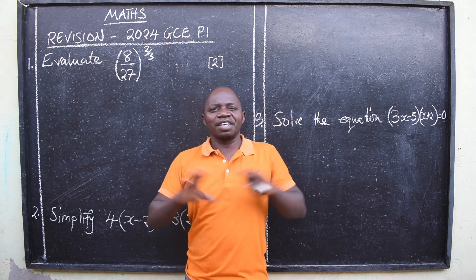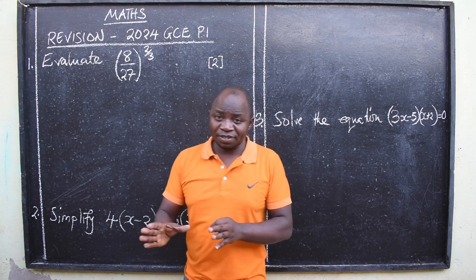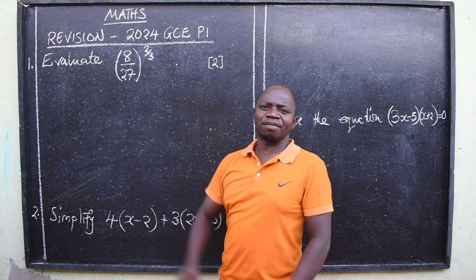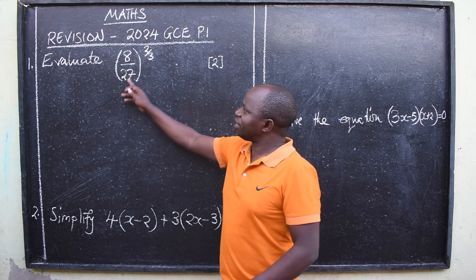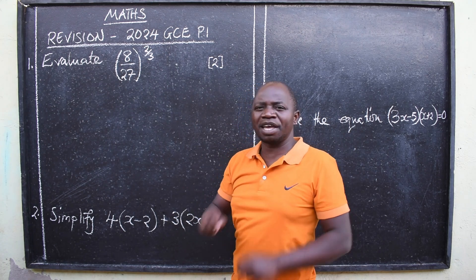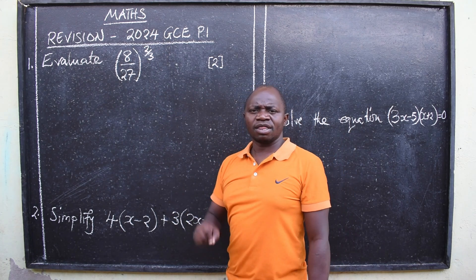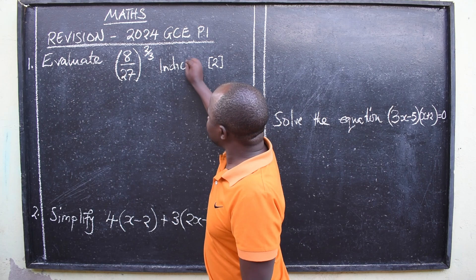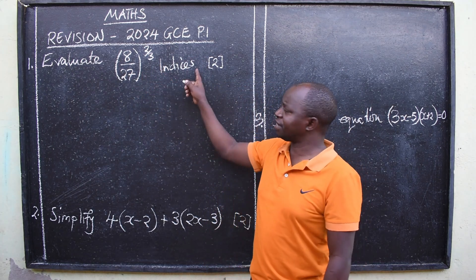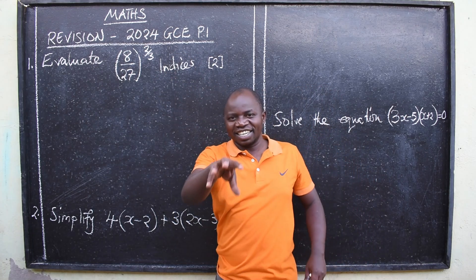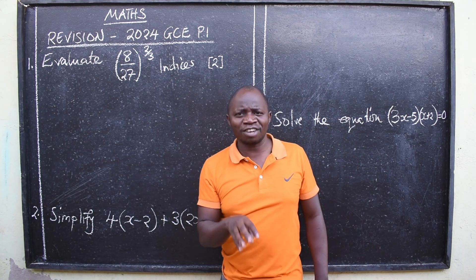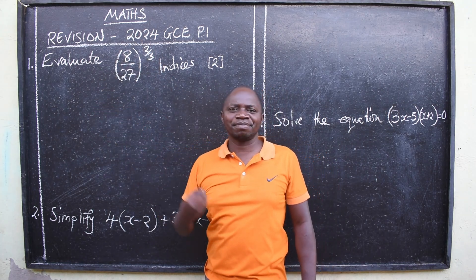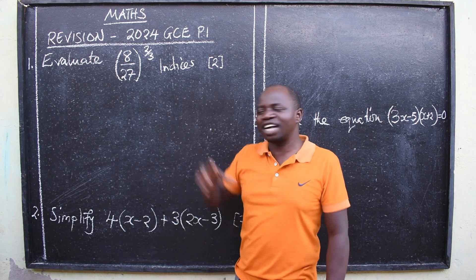What is repeated exactly the way they are are the topics. For example, this question — 8 over 27 raised to the power 2 over 3 — by this time you should be able to identify that this question is from the topic of indices. So you're going to find indices in the exam. I can confirm it's there, but the way it has been asked will be different. This is where I want you to understand as you are going through past papers.